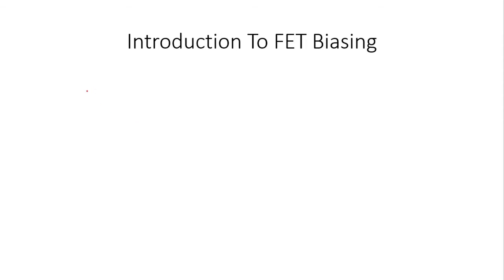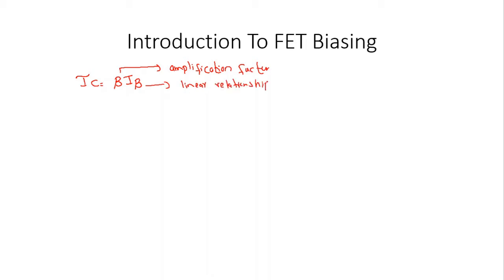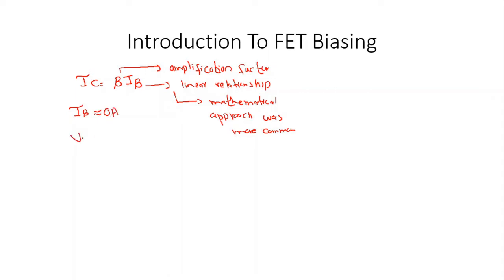In the case of the bipolar junction transistor, the output current was related to the input current by beta — the output current was equal to beta times IB — where beta was an amplification factor. We have a linear relation between output and input variables, which is why the mathematical approach was more common. Key equations used were that IB was approximately zero amperes, and VBE for silicon transistor was 0.7 volts.